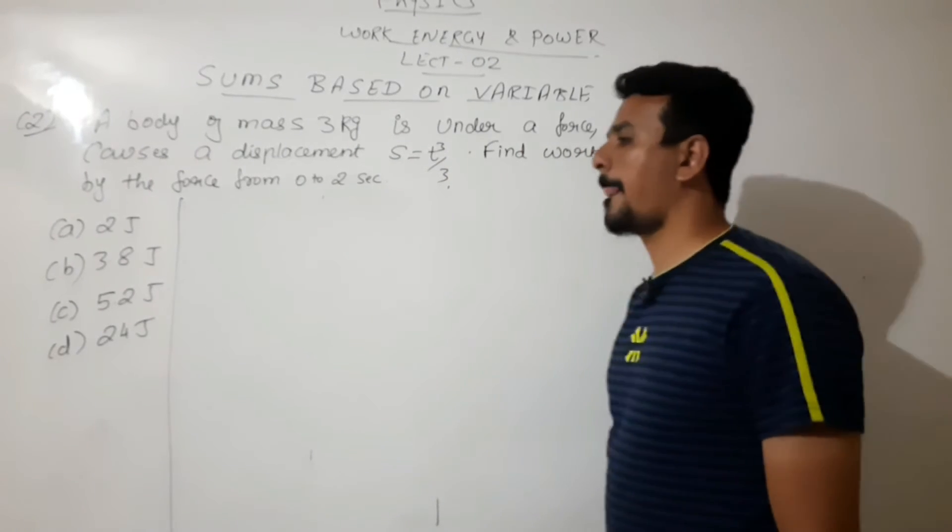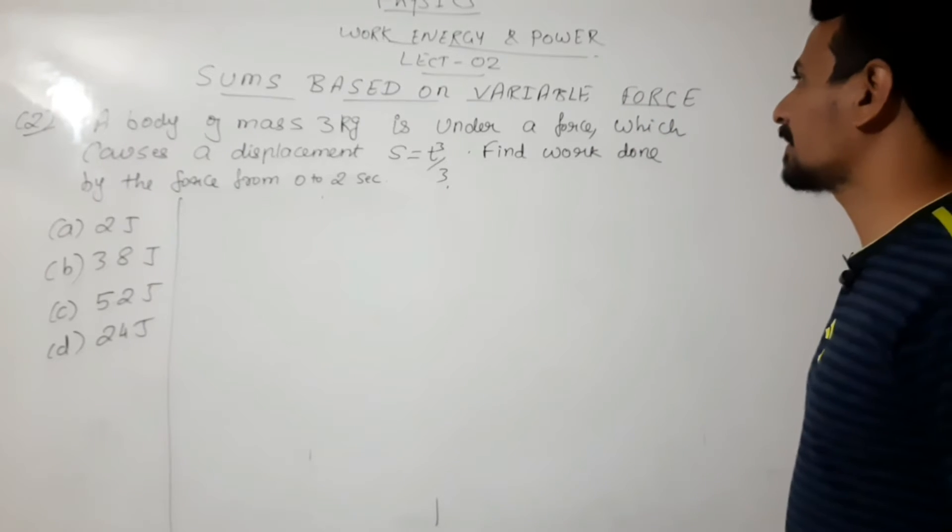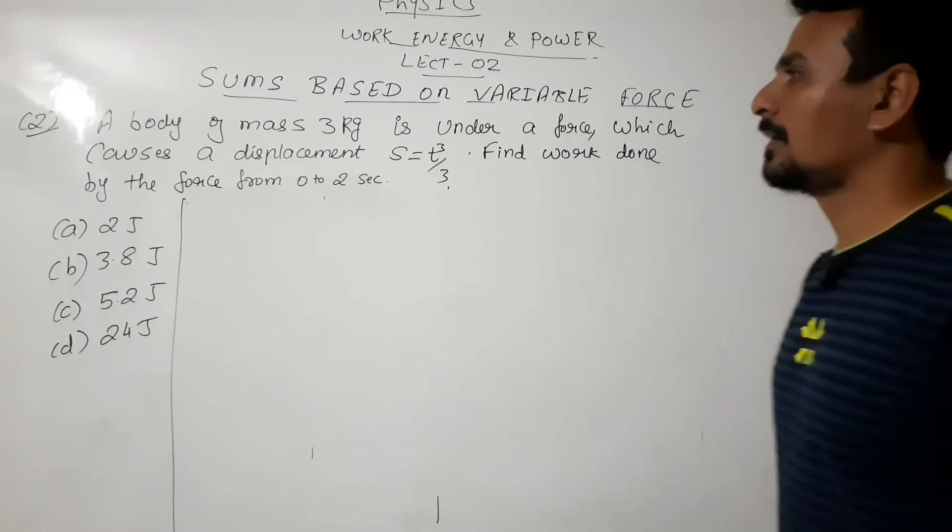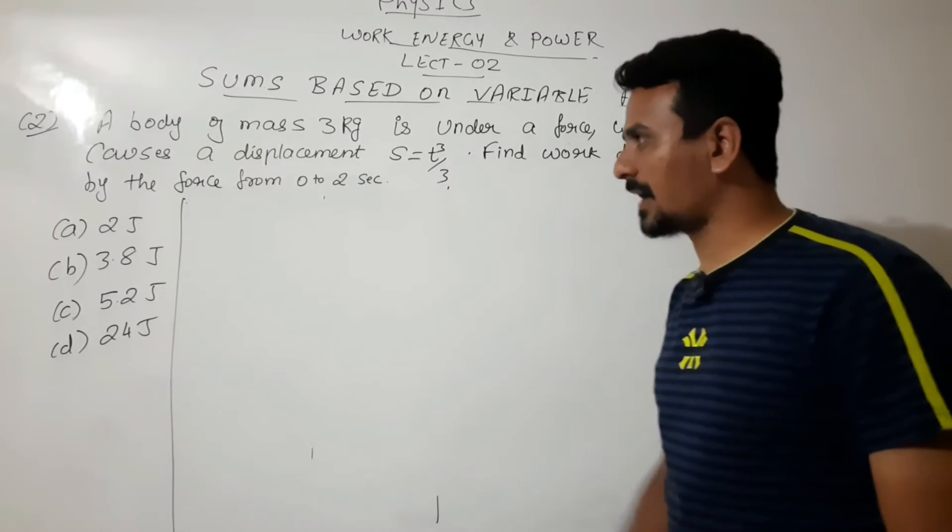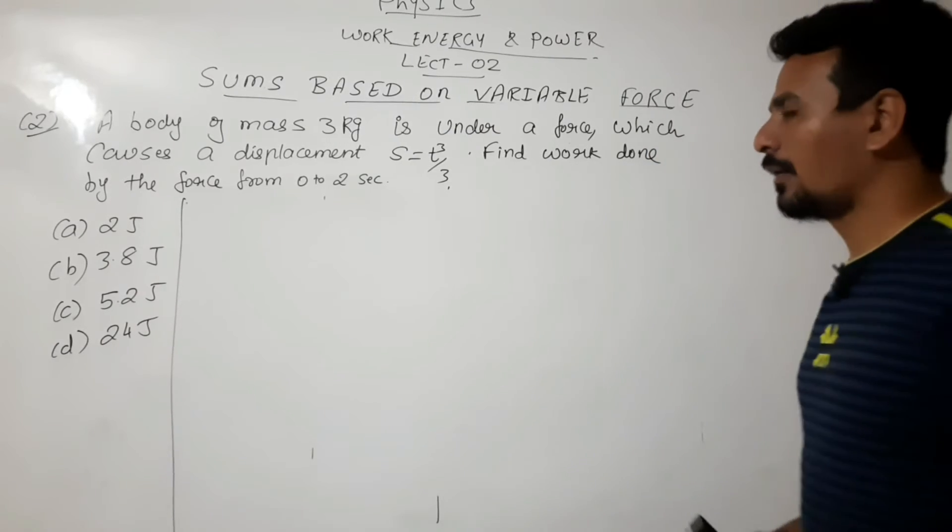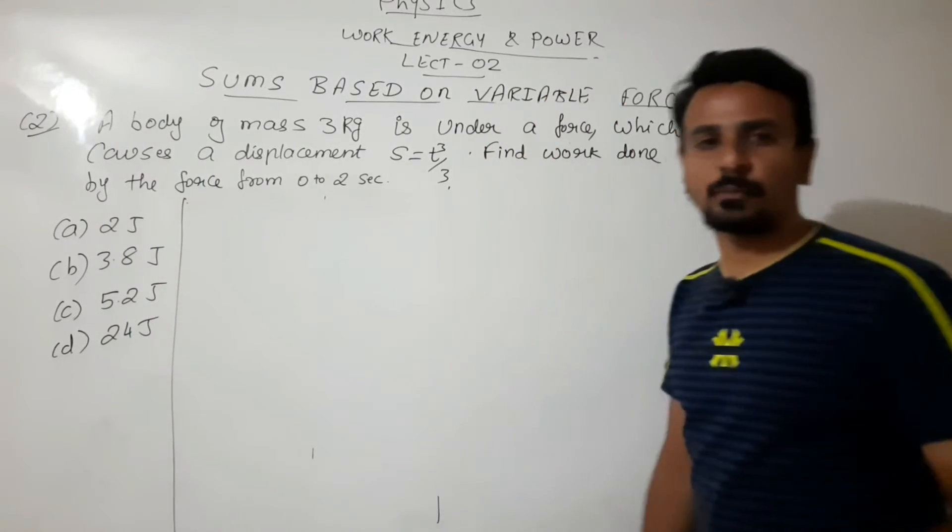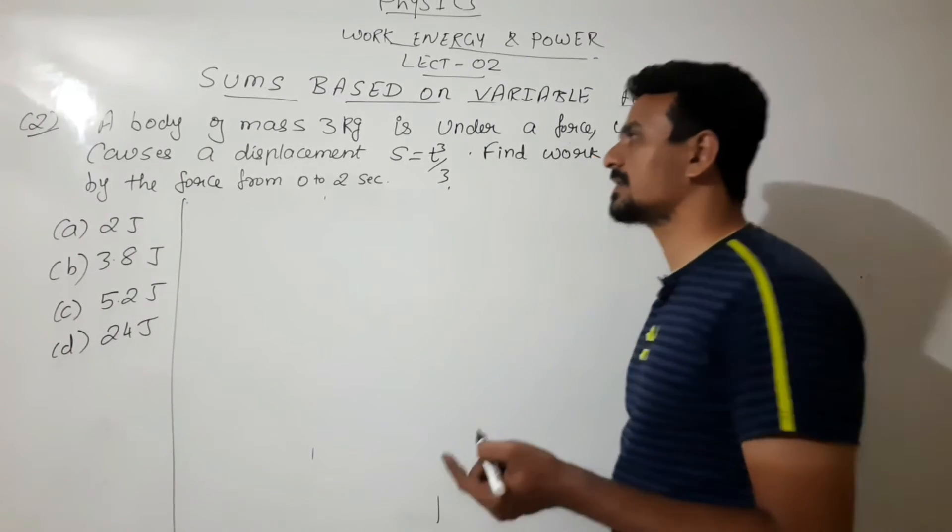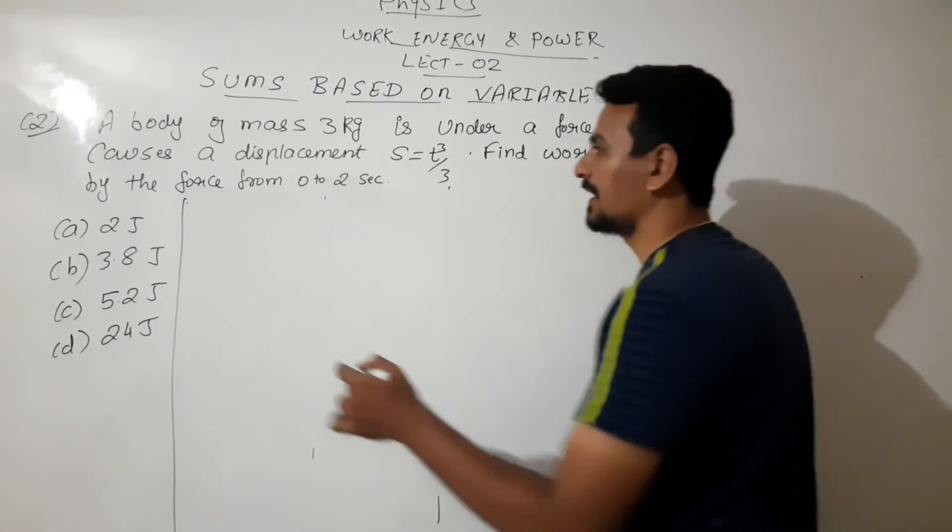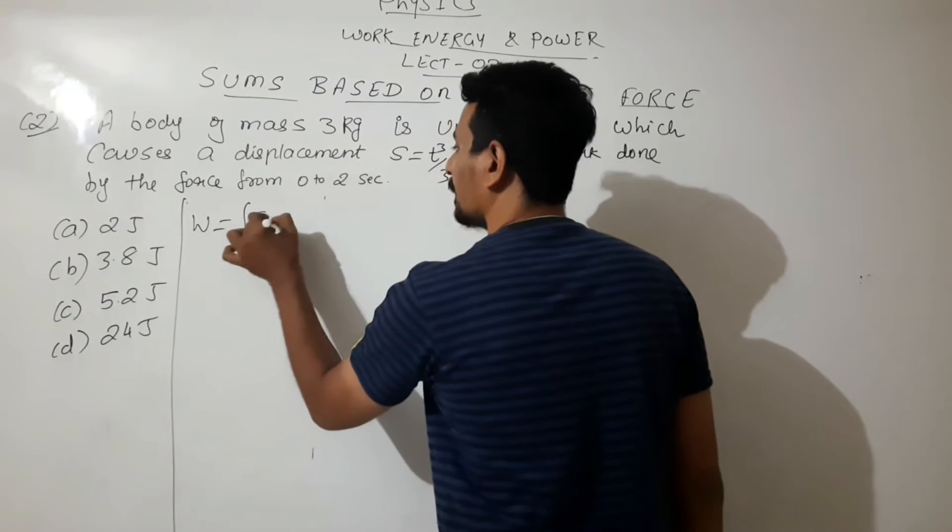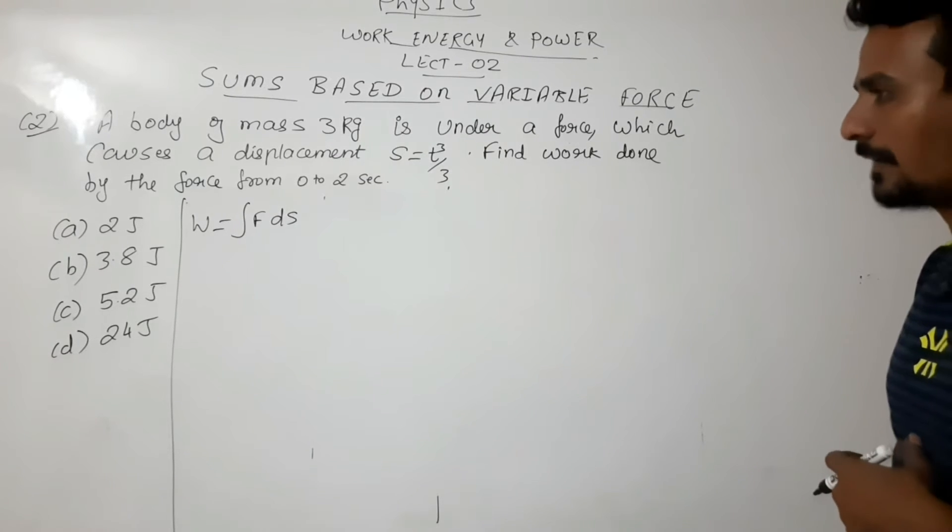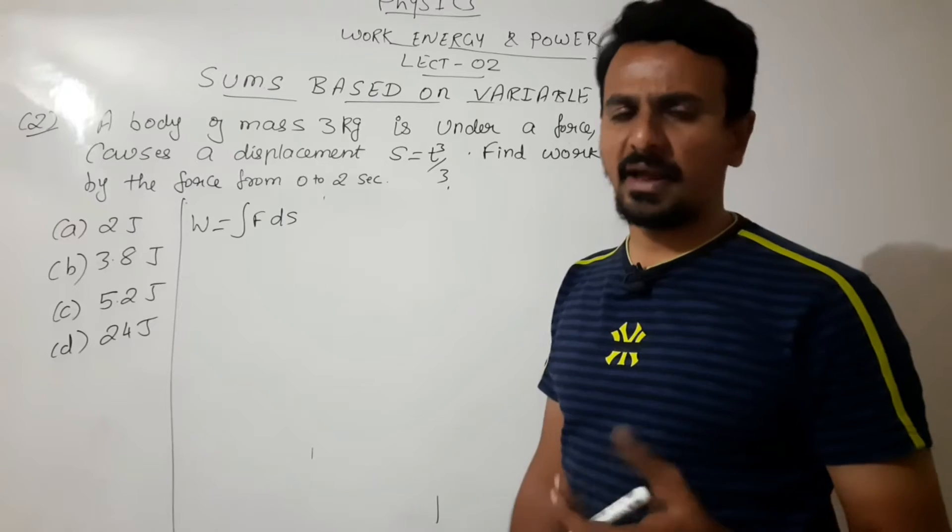Body of mass 3 kilogram is under a force which causes a displacement s = t³/3. That means displacement of the body depends on time. We have to find the work done by the force from 0 to 2 seconds. So now in this case displacement depends on time. If time changes, displacement will change and accordingly work done will change. We have the formula: work done is integration force into displacement. We do not have the value of F, we do not have the value of ds.